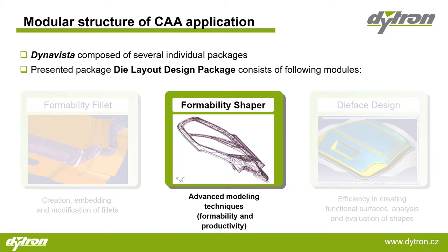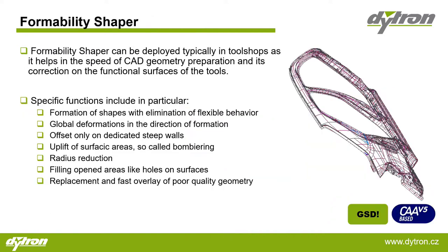In this video, let's take a closer look at the second module from the Dye Layout Design Package, called the Formability Shaper, which is typically used in tool shops. The Formability Shaper's function is used to transform the pressed sheet itself so that it is usable in a simpler way later on by the tool — for instance, by means of pre-tensioning tools, global deformation, and so on. Based on the material and technology used, it is necessary to take into consideration different forms and deformation scenarios of the molding. Dynavista is not a simulation tool; it is a geometry tool for the necessary geometry changes.